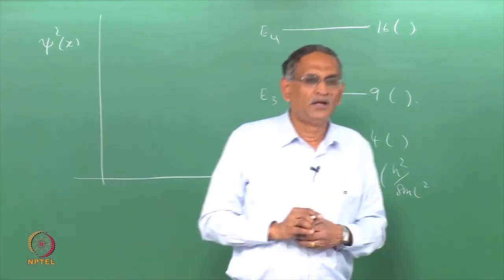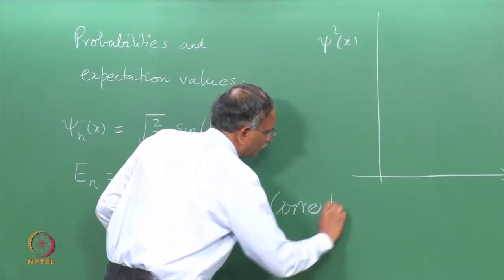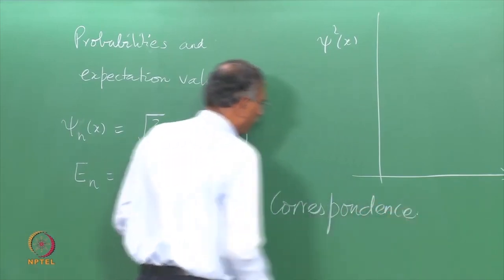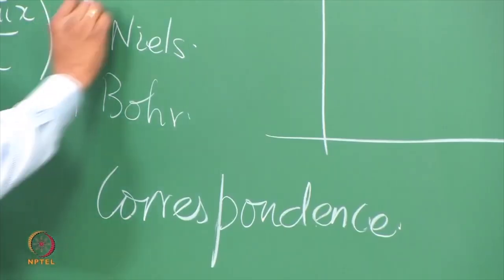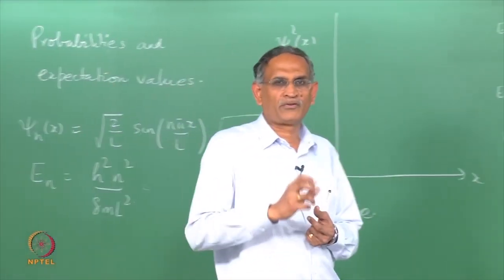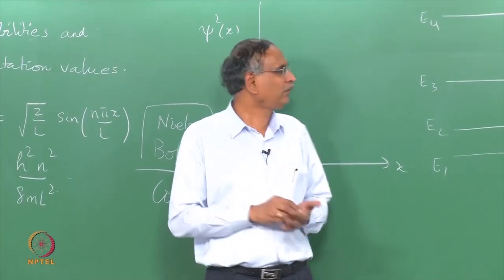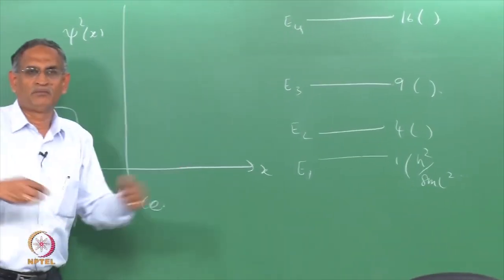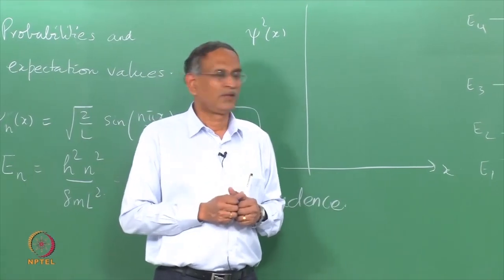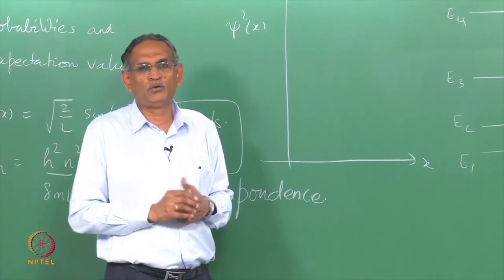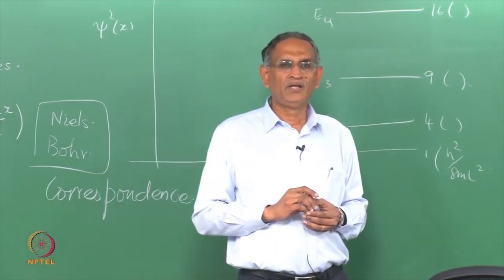This is an important correspondence limit as one would call it. This was first considered by Niels Bohr. The correspondence principle is that quantum mechanics approaches classical predictions, classical mechanical predictions, for very large values of the quantum number, very large particles of macroscopic dimensions and particles of macroscopic size. Then quantum is less and less important and that is how we were never able to discover quantum mechanics until we started looking at the atomic details more and more closely.